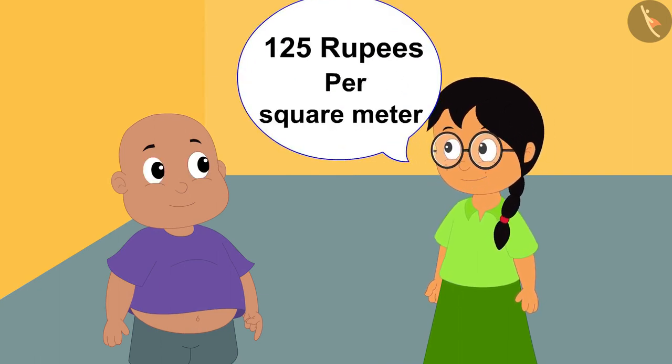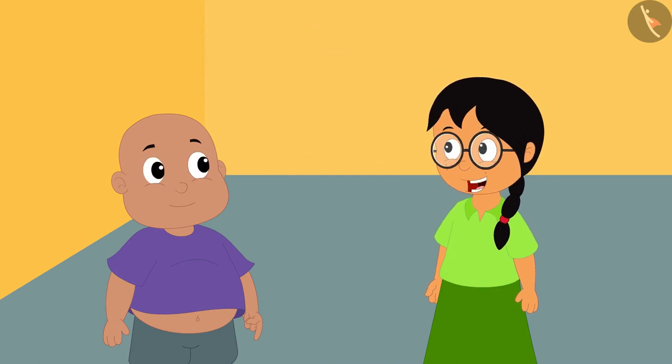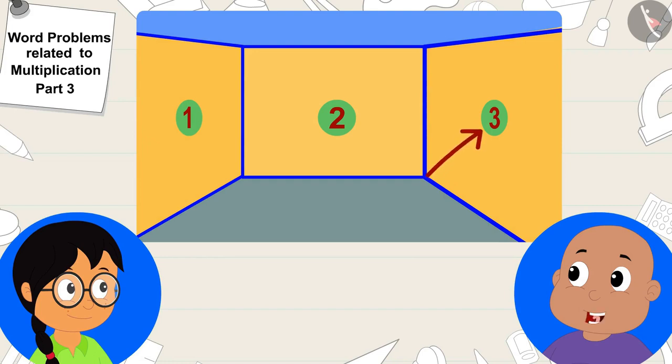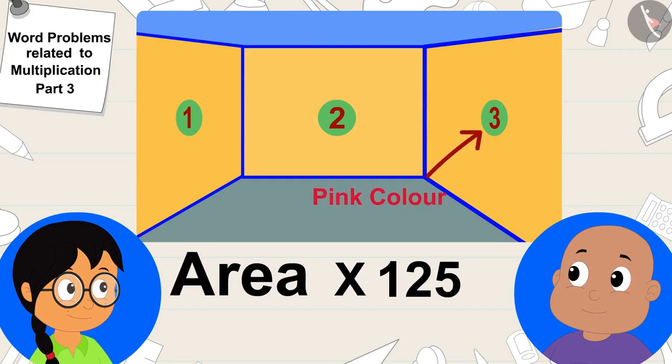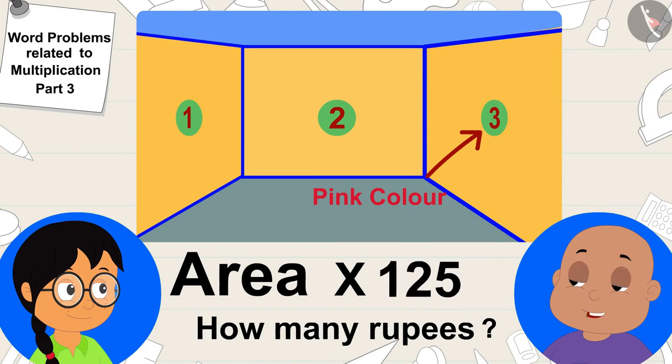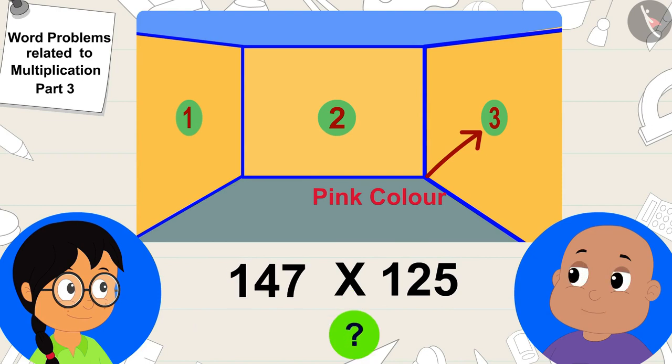Bablu, my father said that it takes 125 rupees per square meter to paint the wall, Meenu told Bablu. It means we have to multiply its area by 125 to find out how many rupees it would take to paint this wall pink. What will be 147 times 125, Bablu asked Meenu.